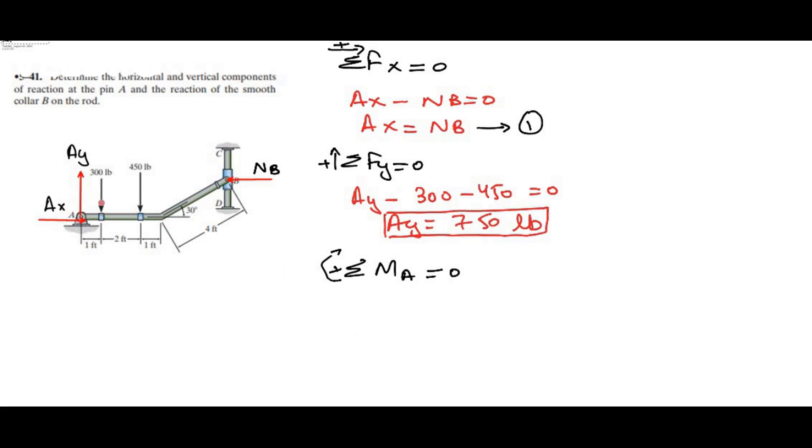This 300 lb force is trying to rotate the assembly in clockwise direction, so it is taken as positive. 300 times the moment arm which is 1 foot. Also, this 450 lb is producing the clockwise moment, which is also positive: 450 times the moment arm, which is 1 foot plus 2 feet, so in total 3 feet.